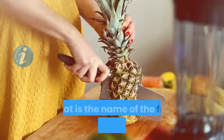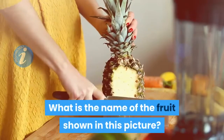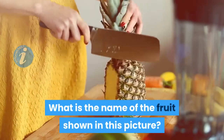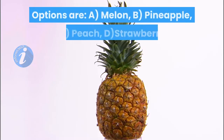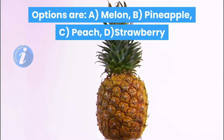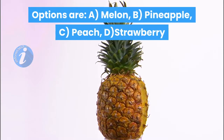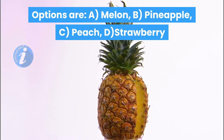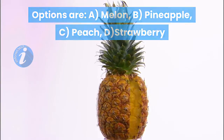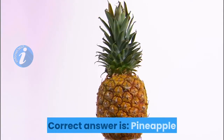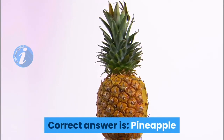What is the name of the fruit shown in this picture? Options are: A. Melon, B. Pineapple, C. Peach, D. Strawberry. Correct answer is Pineapple.